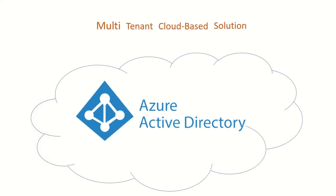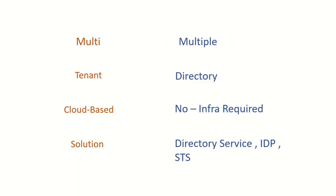I'm emphasizing identity as a service because it's a very common term in Azure Active Directory articles. Another common term is that Azure Active Directory is Microsoft's multi-tenant cloud-based solution. In simple terms: multi-tenant means there are many directories created in Azure Active Directory as a service and every directory is isolated — just replace 'tenant' with 'directory.' Cloud-based means no on-prem infrastructure is required, and solution means AAD provides directory services — user objects, group objects — and can act as an identity provider.